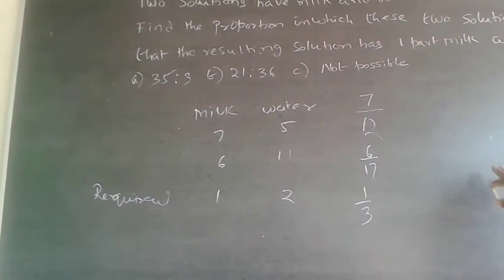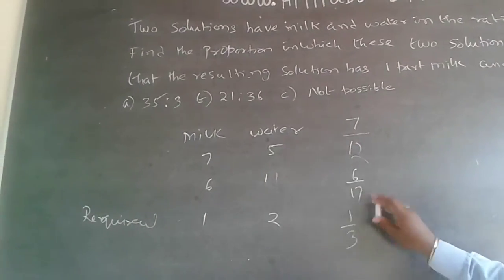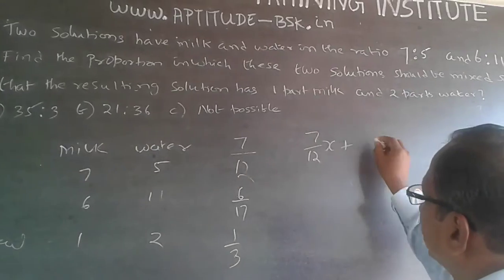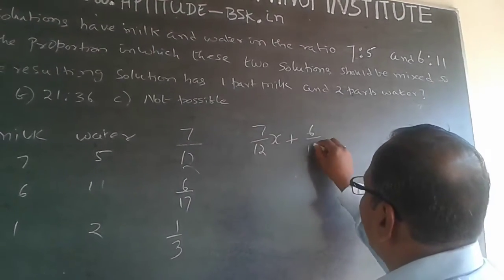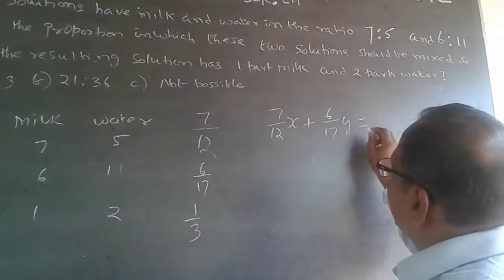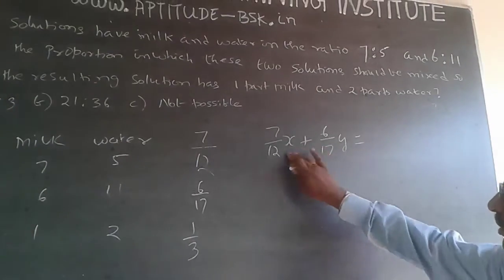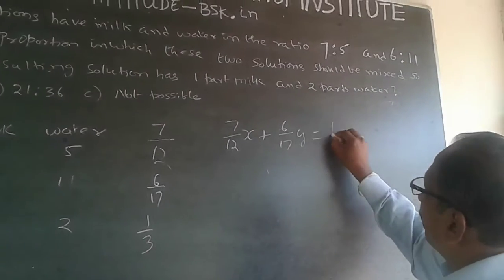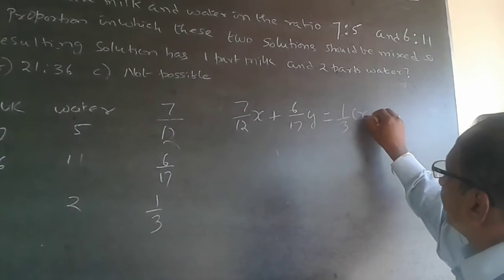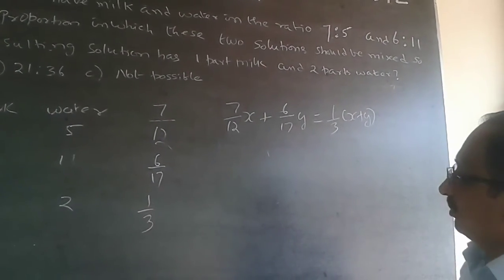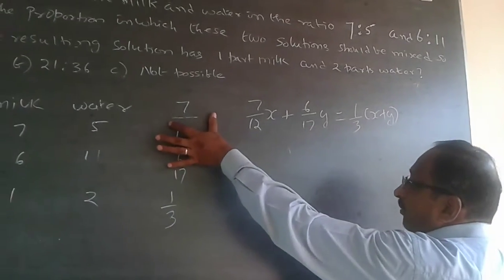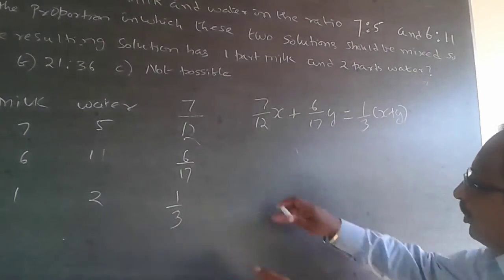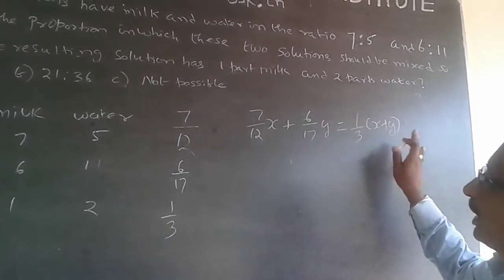Now use the allegations. Take x quantity from here and y quantity from here. So 7 by 12 of x plus 6 by 17 of y should be equal to - see what I have taken is x plus y quantity. This should be because of what I want, 1 by 3 of x plus y. Take x quantity from this, take y quantity from this and what I want is 1 by 3 of x plus y.